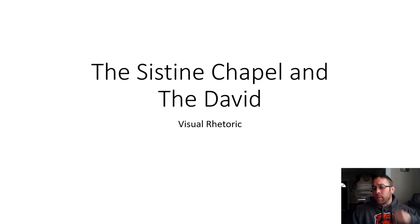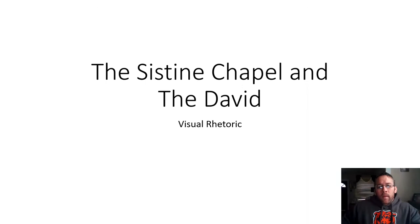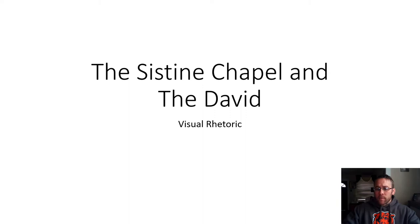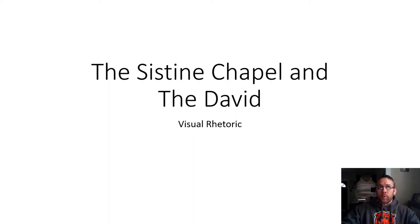Hello. Today we are continuing our discussion on the idea of visual rhetoric. We just finished up the Prodigal Son book written by Henry Nouwen, where we talked about Rembrandt's painting Return of the Prodigal Son. The big takeaway is that you can take one painting and pack in a lot of discussion. What we usually do when it comes to museums is walk around, look at a piece of art, and say I like it or I don't like it.